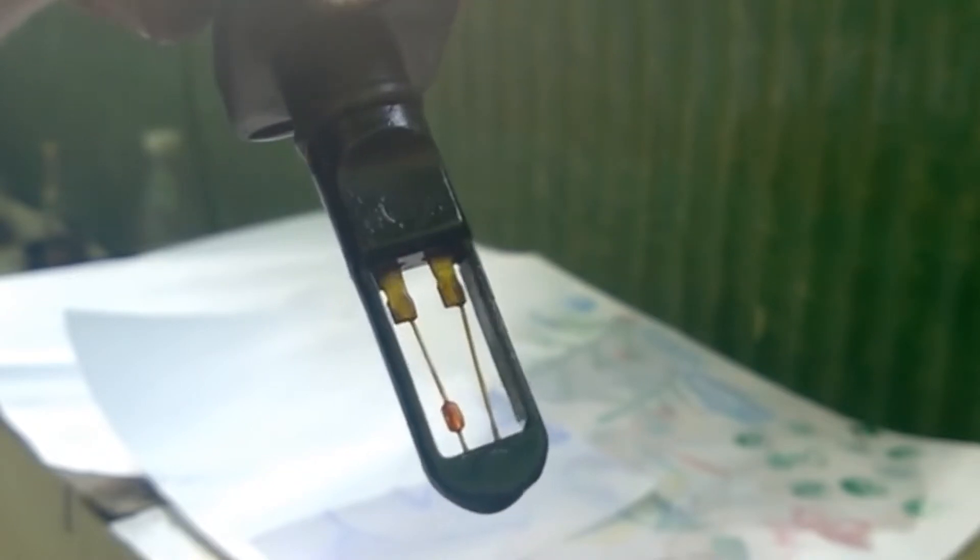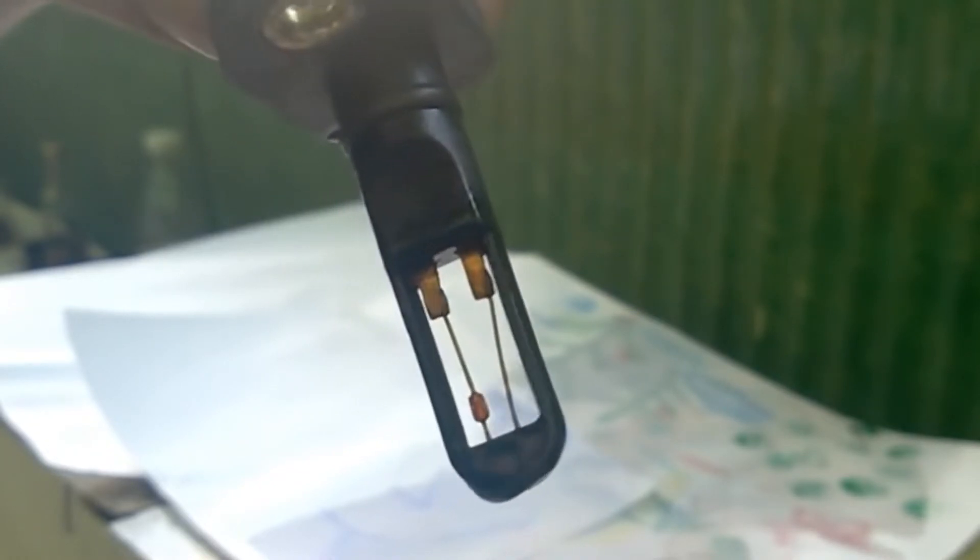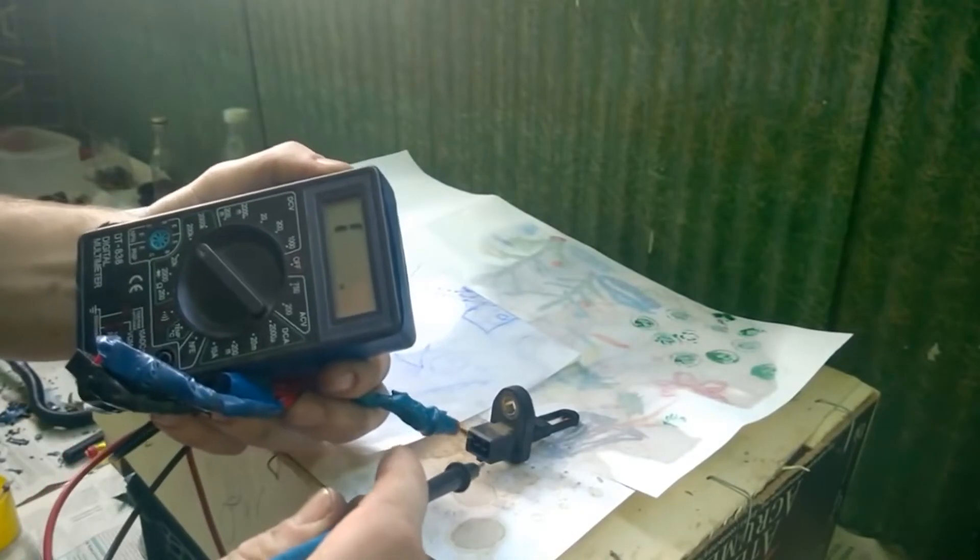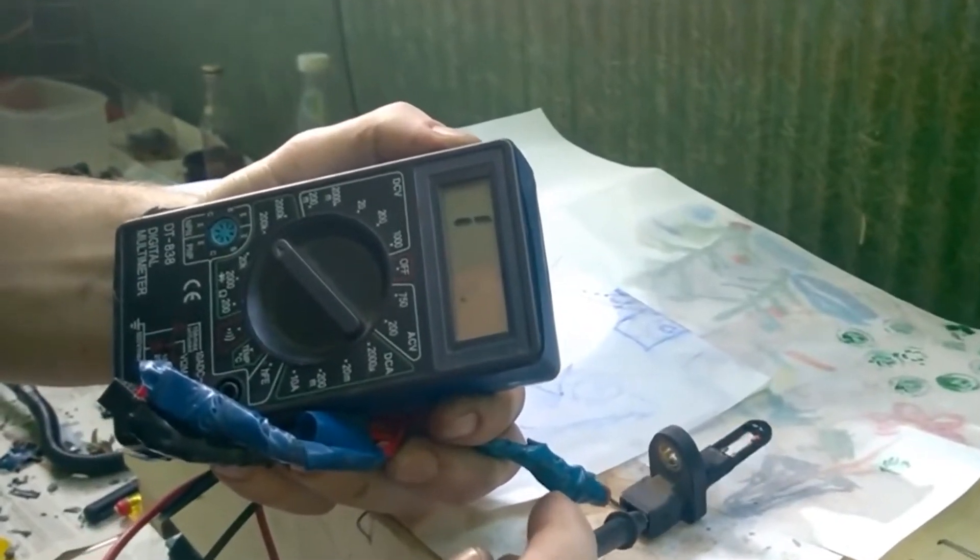Since the spray is under pressure it cools the sensor during cleaning so the resistance should increase now. Connect the measuring device again and check the resistance value.